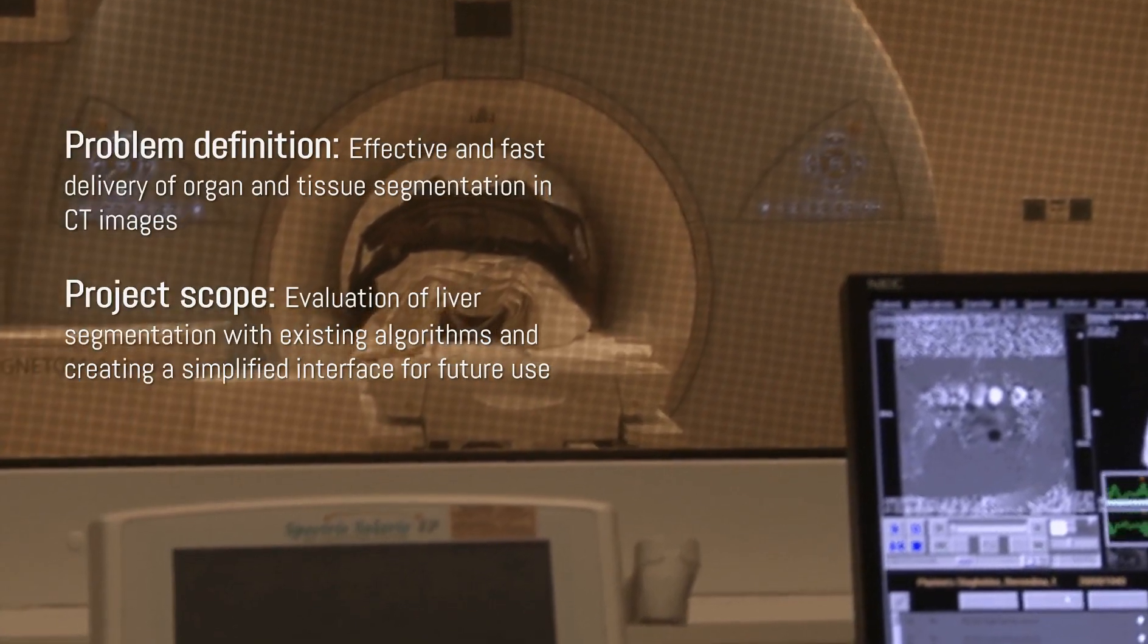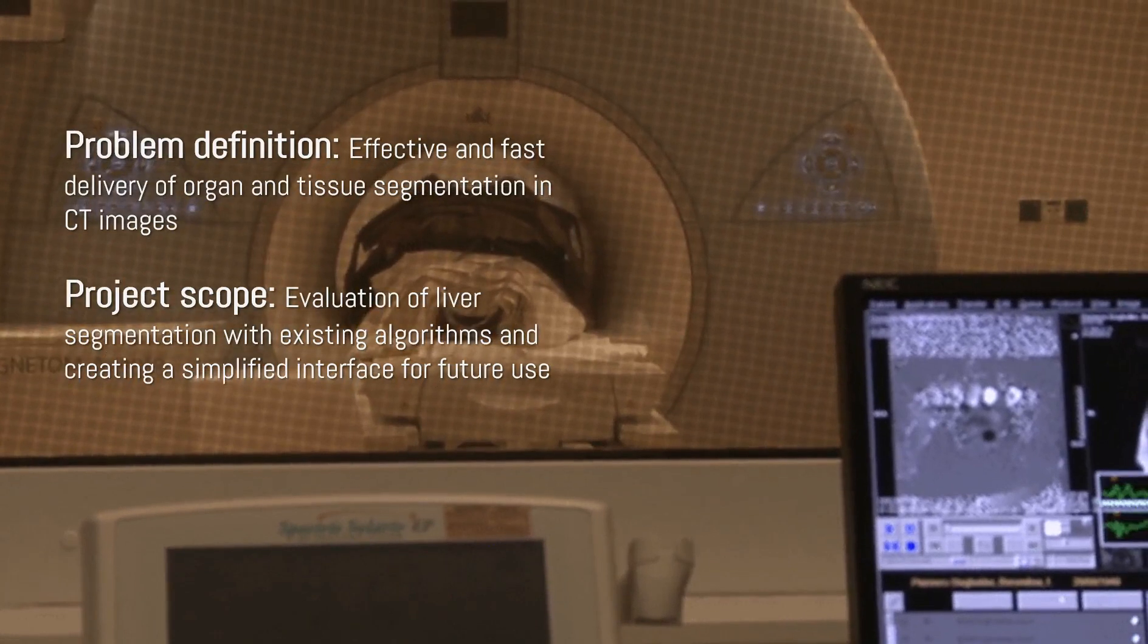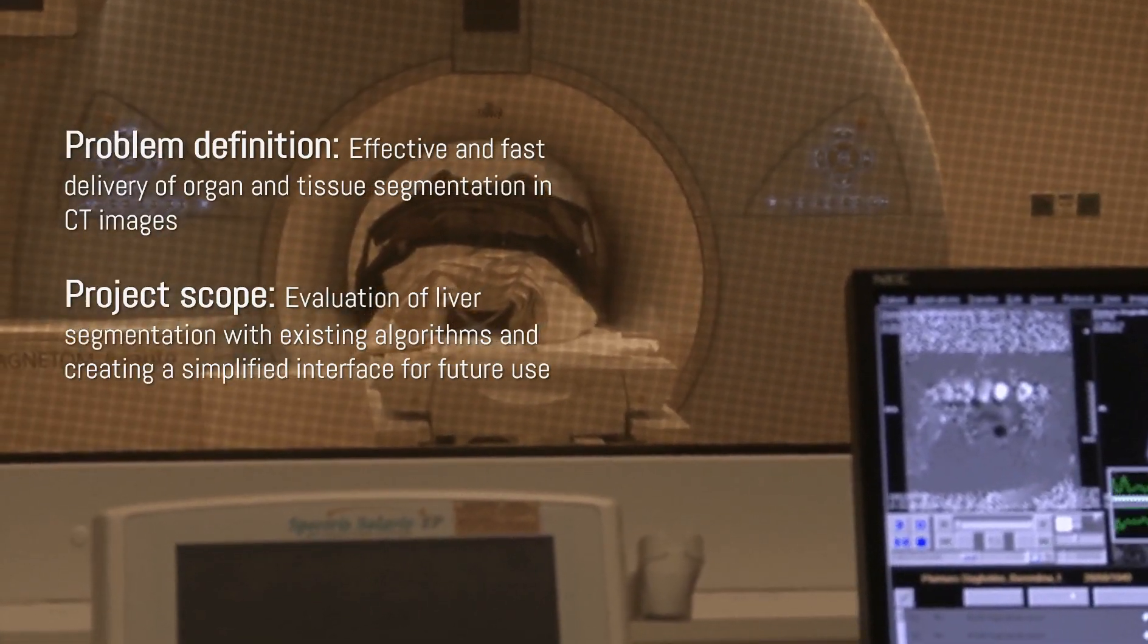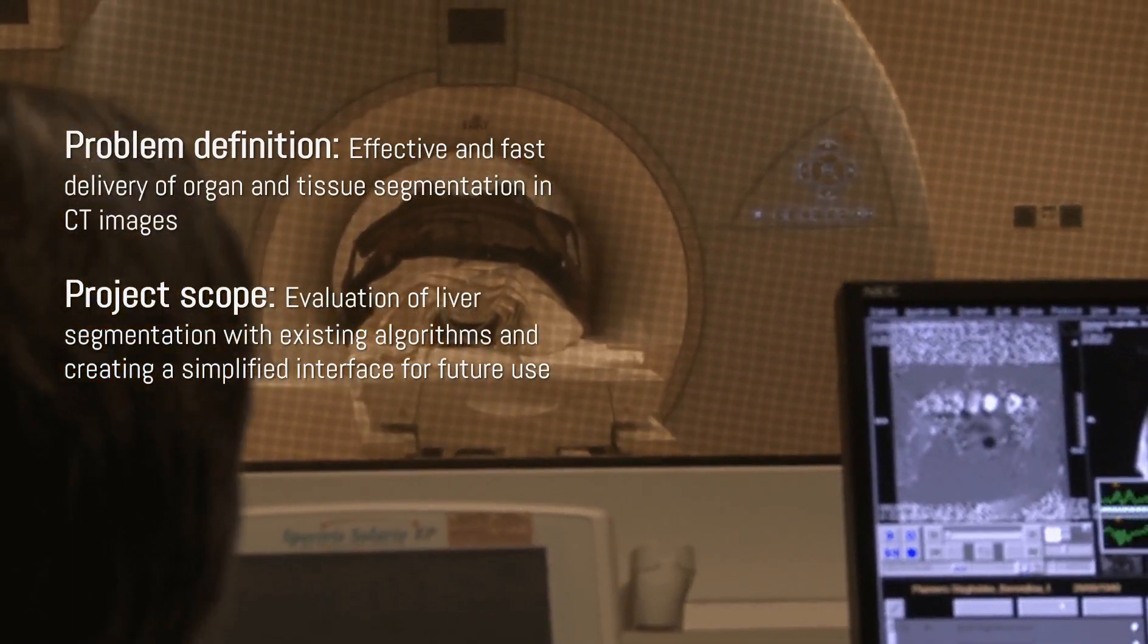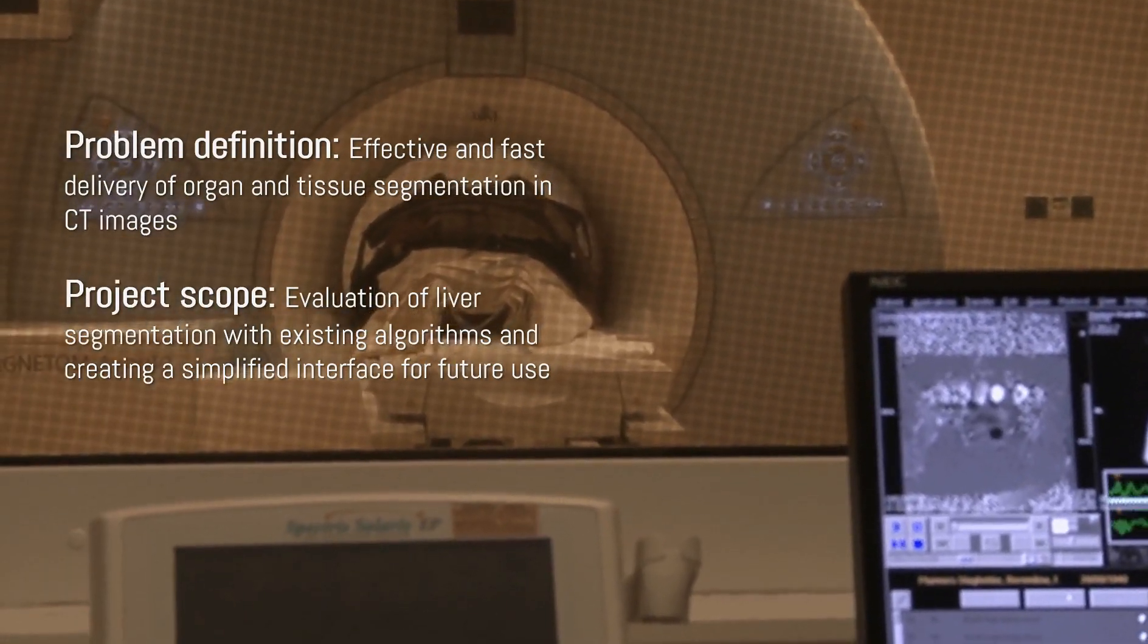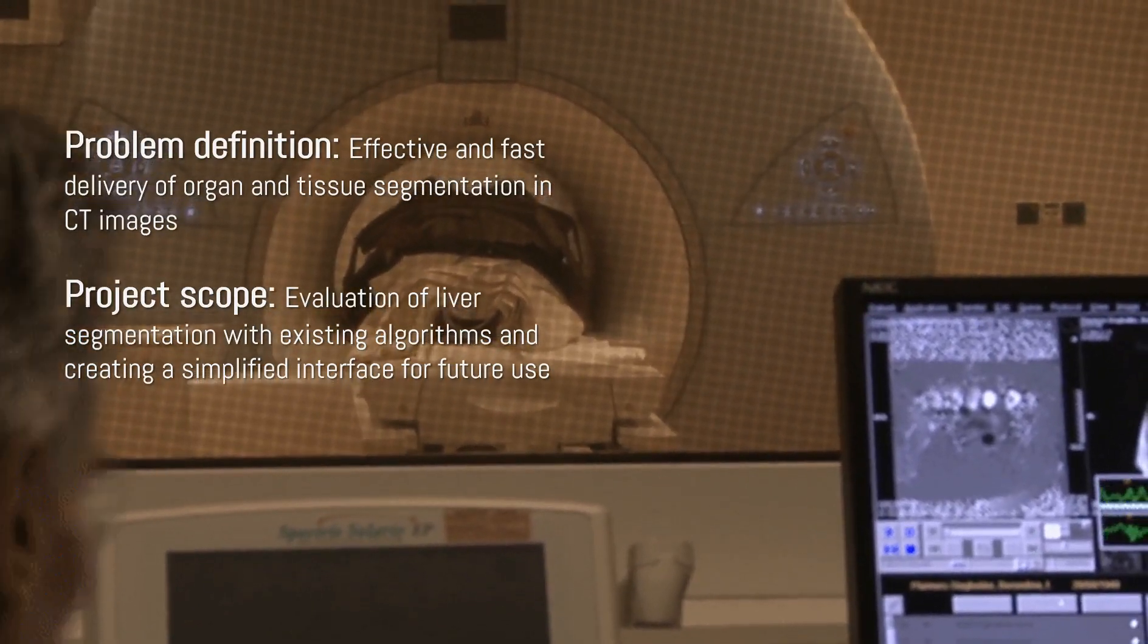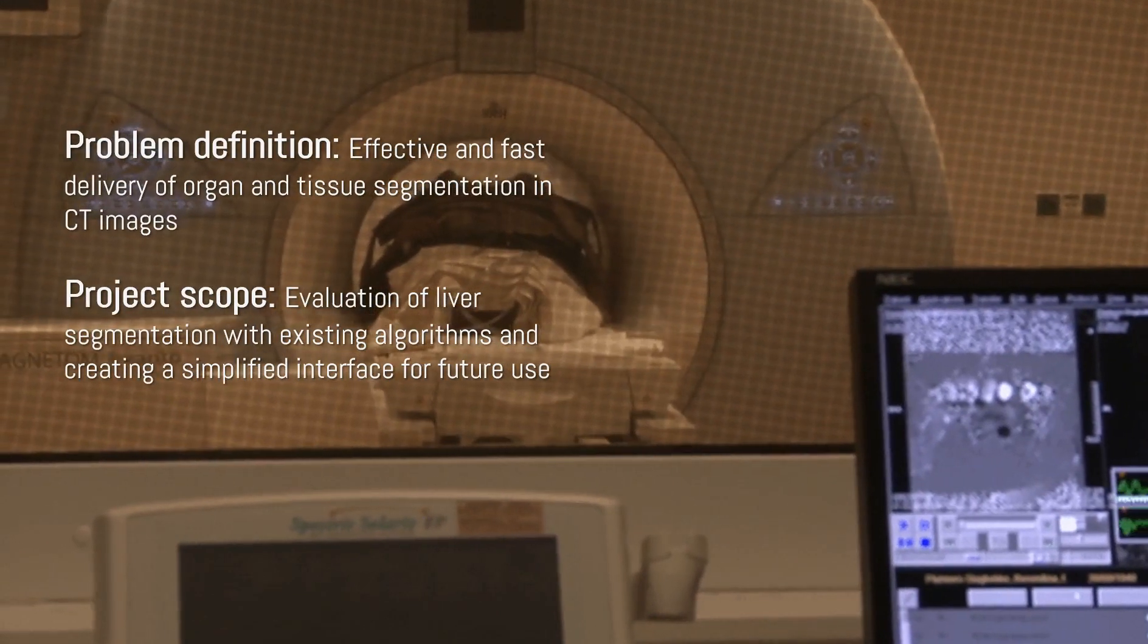Providing organ-tissue segmentation in these images has long been found in the literature as one of the subjects of deep learning technology. In line with these current medical and deep learning studies, our project aims to make liver detection faster and more effective in abdominal tomography images. The results were observed by working on liver detection with segmentation algorithms in different branches and subjects.